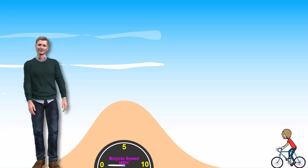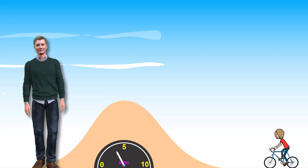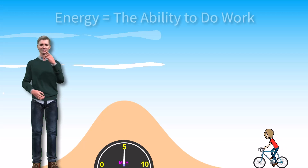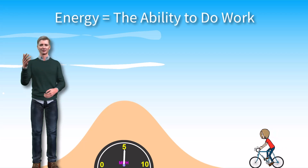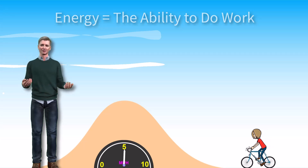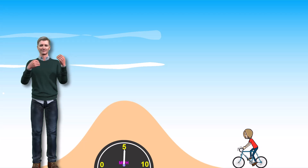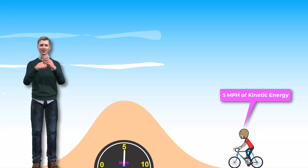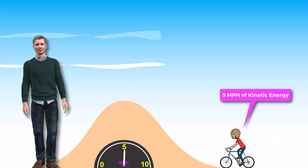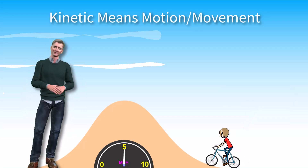Here we see a bicyclist pedaling on a flat road at 5 miles per hour toward a hill. Pedaling the bicycle gives it a specific amount of energy, with energy being defined as the ability to do work. The work being done here is moving the bicycle at a constant speed of 5 miles per hour. The bicycle has 5 miles per hour of kinetic energy, with the word kinetic meaning motion or movement.